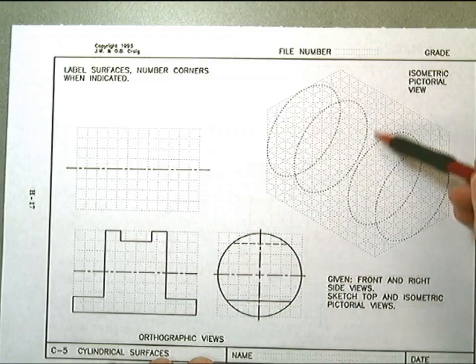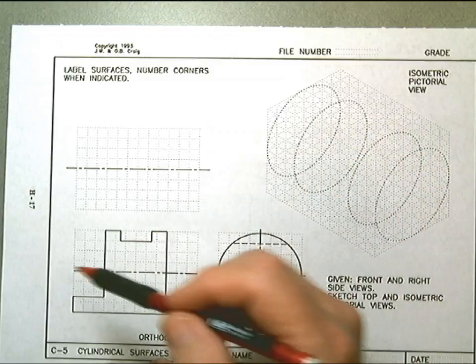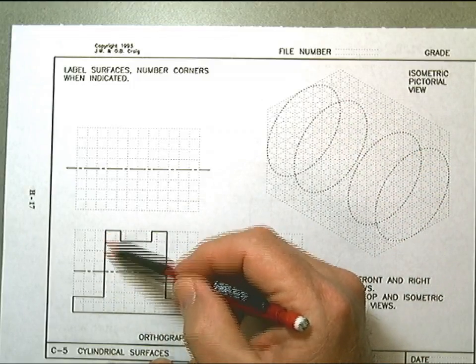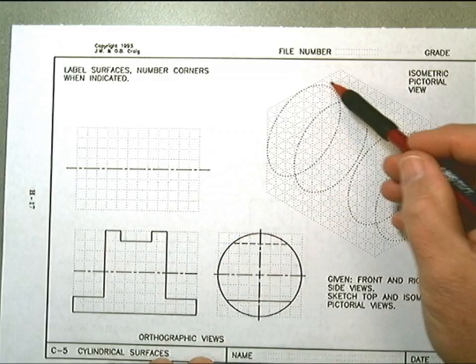Then this ellipse here is represented here as this edge, and then the back.